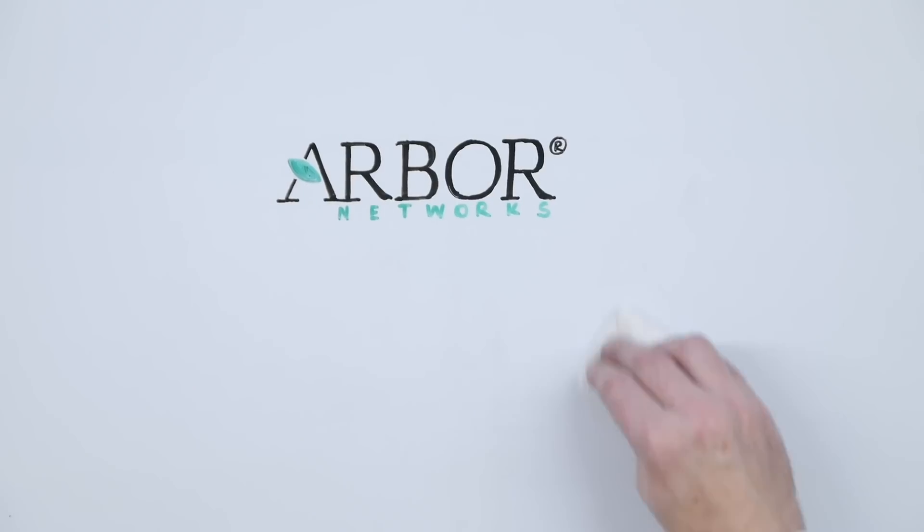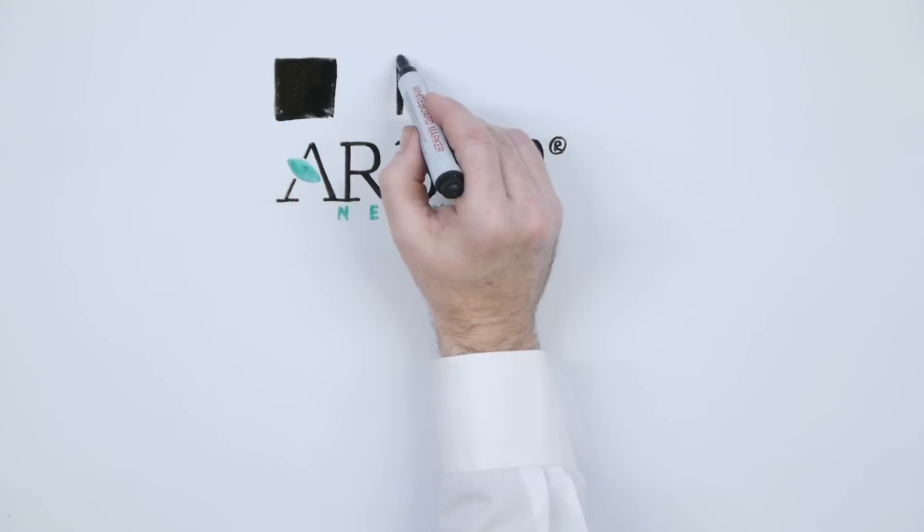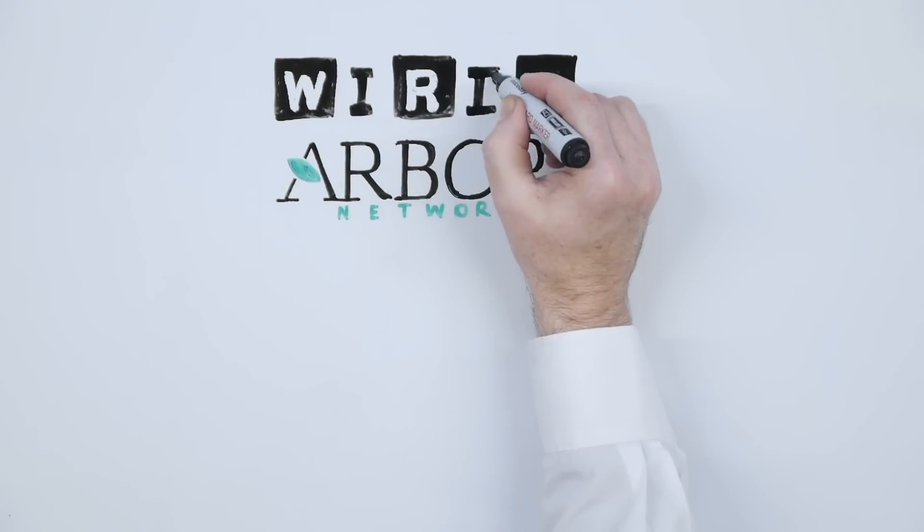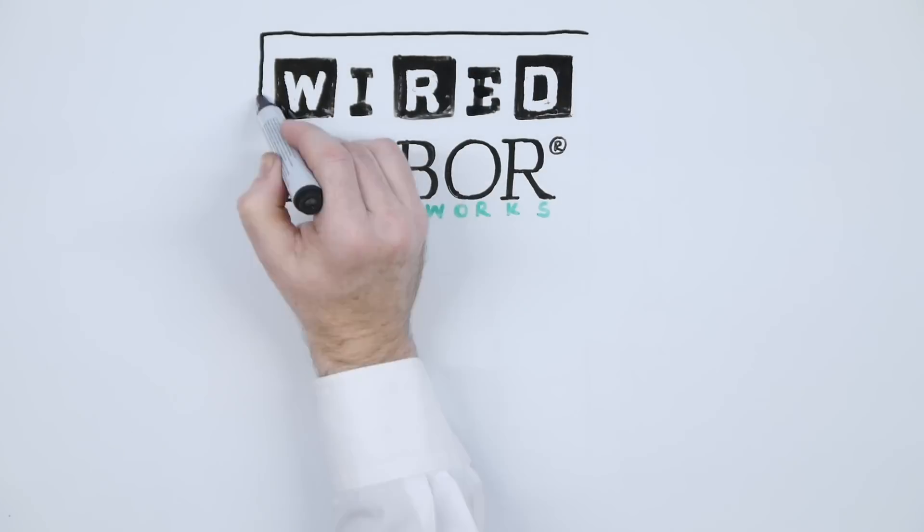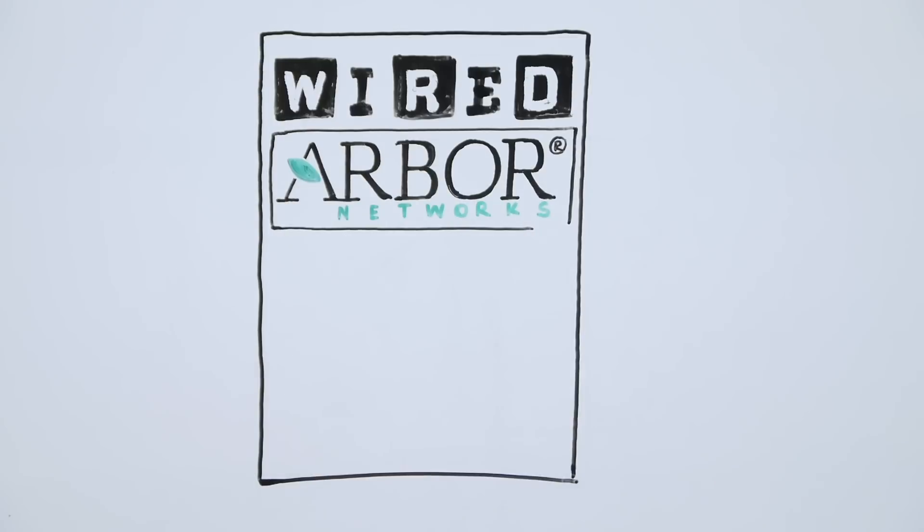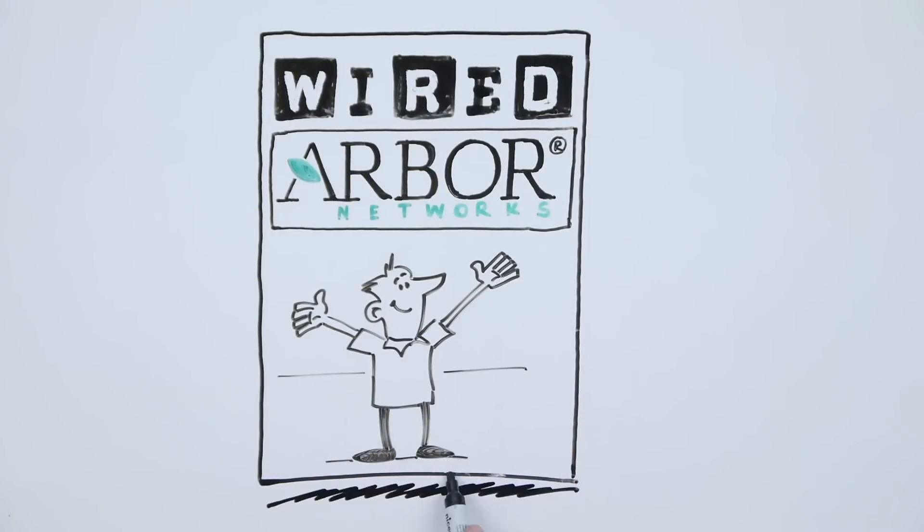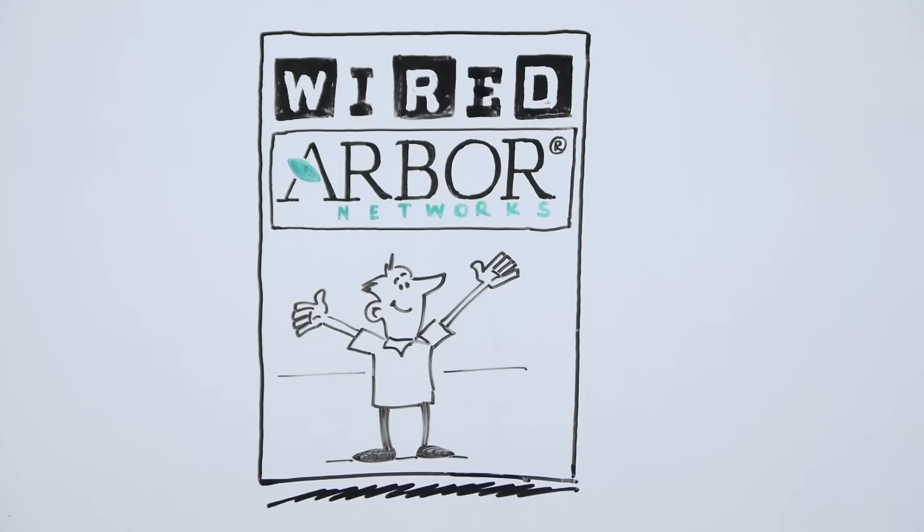Wired Magazine once said, Arbor Networks knows more about the Internet's workings than possibly anyone outside of the National Security Agency. Their monitoring equipment sits in nearly all Tier 1 Internet providers. And if you want data on what the Internet looks like and what the top threats are, they've got it through their Atlas service.